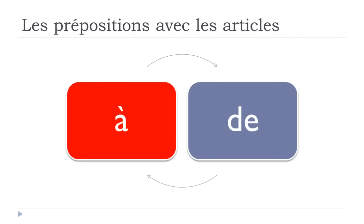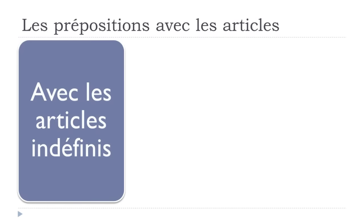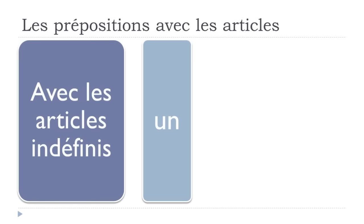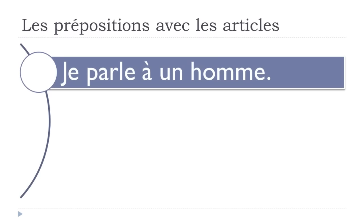The first preposition we'll discover together will be À, avec les articles définis. I took the verb parler — to talk — because it's quite interesting: you can use it with the preposition À, meaning 'to talk to,' and it's also possible to use it with the preposition DE, meaning 'to talk about something.' That's why I wanted to use this verb — to show that basically it's possible to use two prepositions to express something different.